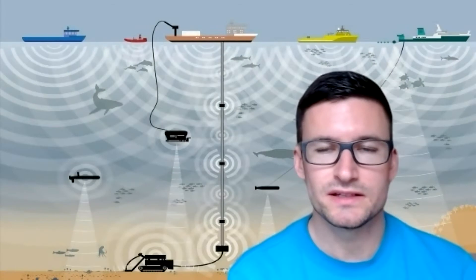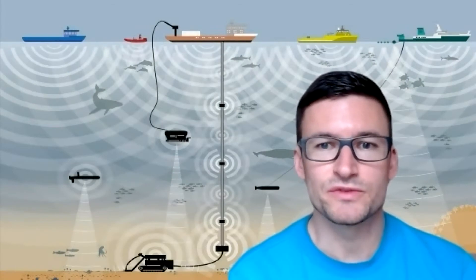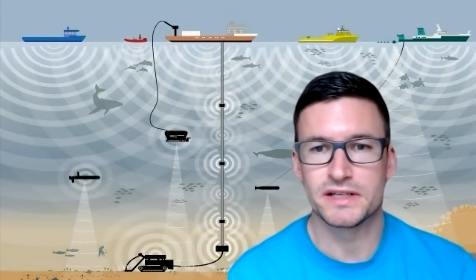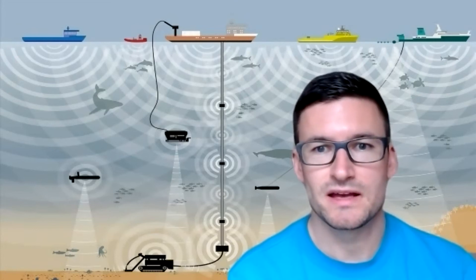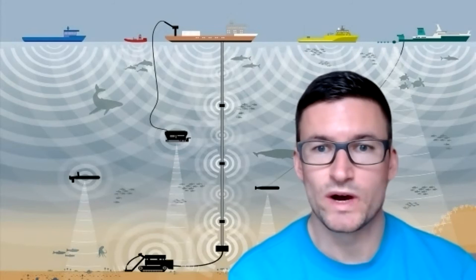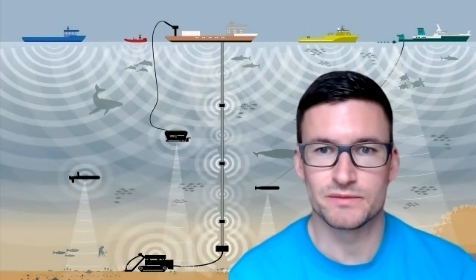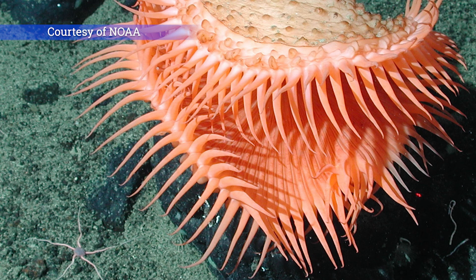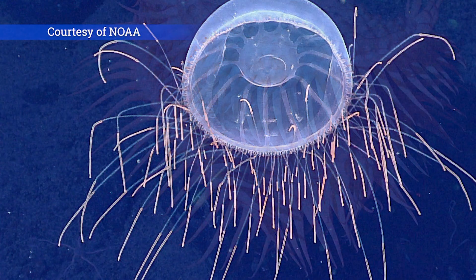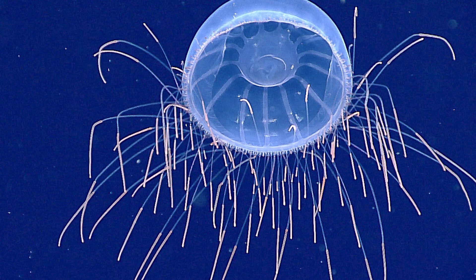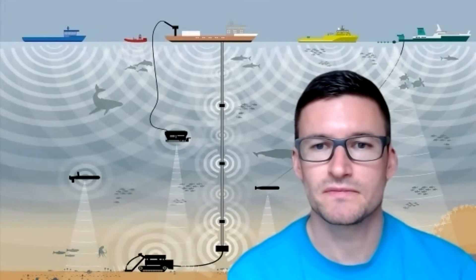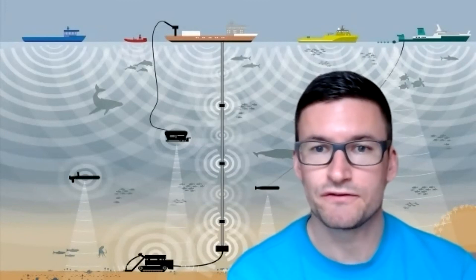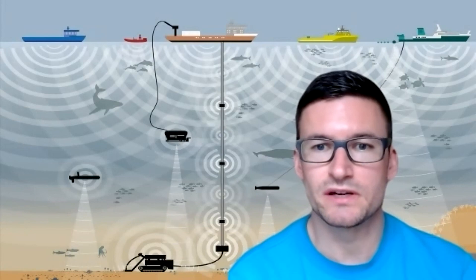The easiest thing is to reduce noise at source, for example, redesign ships or just make them go slower. Second, we need areas in the ocean that are less affected by underwater noise, so we need quiet zones to protect the animals. It's very important that we know more about noise, so we need more research. We don't know enough yet, especially not when it comes to impacts on deep sea species. Until we know more, we have to follow a strict precautionary approach.